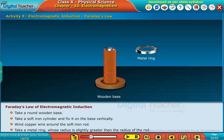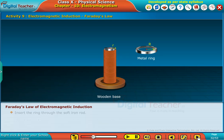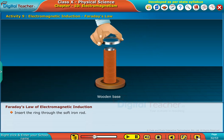Take a metal ring whose radius is slightly greater than the radius of the rod. Insert the ring through the soft iron rod.